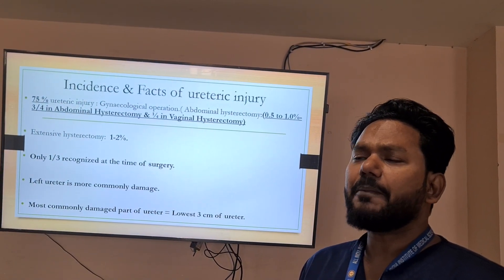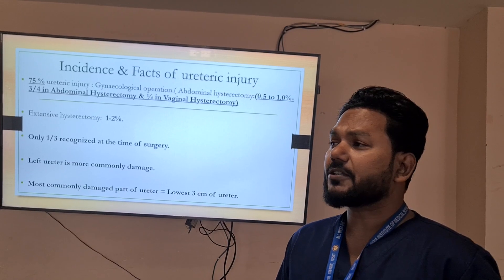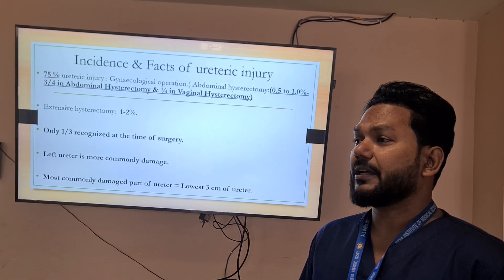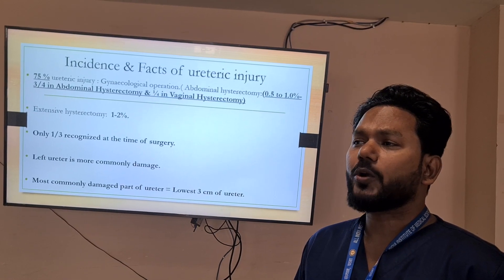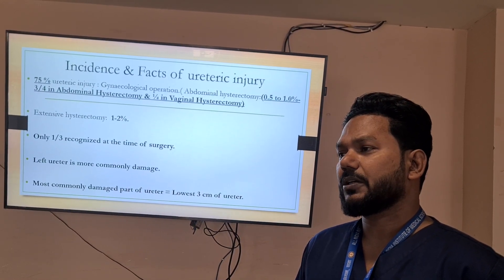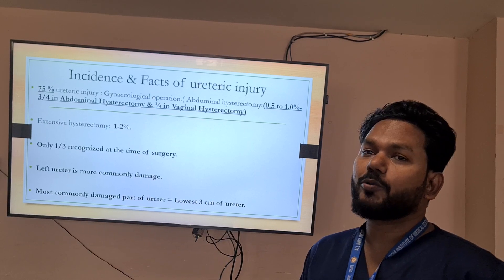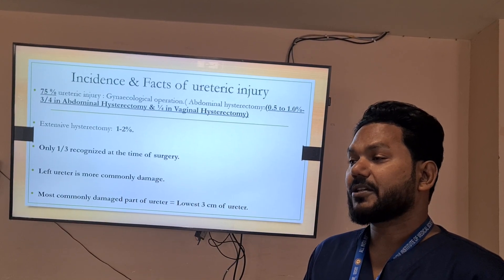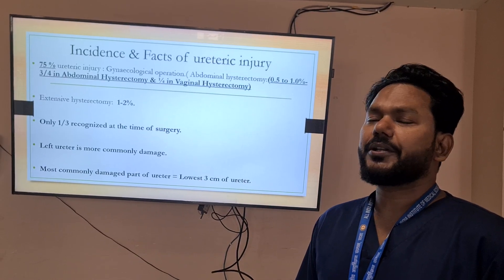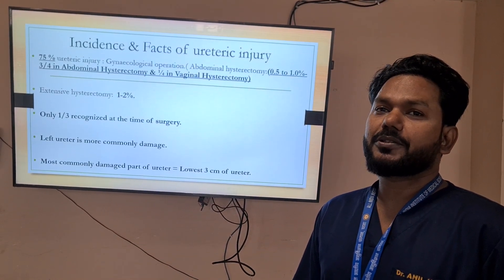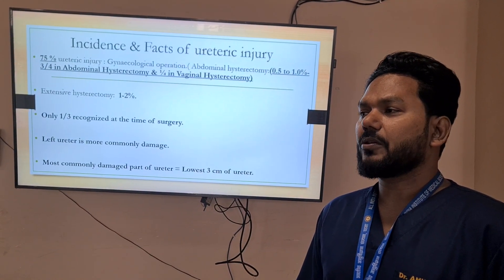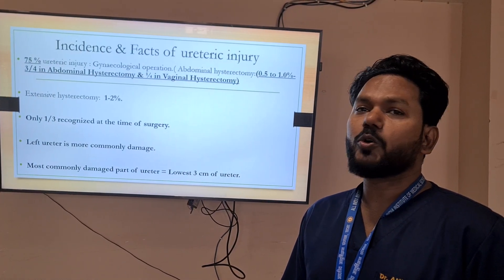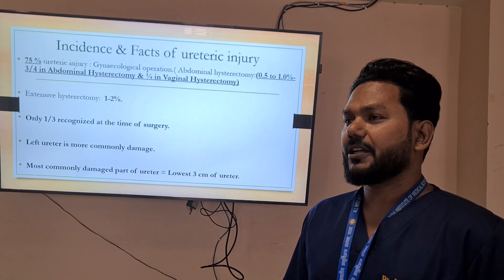Regarding incidence, 75 percent of ureteric injuries result from gynecological operations, mostly in abdominal hysterectomy, and the incidence is slightly higher in cases of extensive hysterectomy. Unfortunately, only one-third of ureteric injuries are recognized at the time of surgery. Compared to the right, the left ureter is more commonly damaged because of its location near the sigmoid colon and its mesentery, and the lowest three centimeters of the ureter are most commonly damaged in hysterectomy-related injuries.